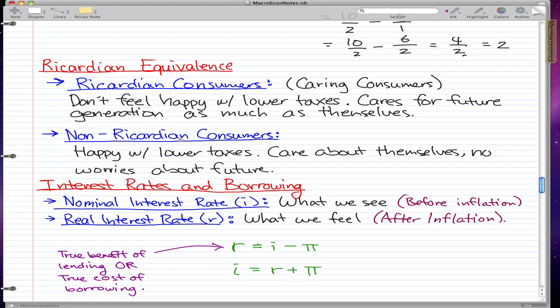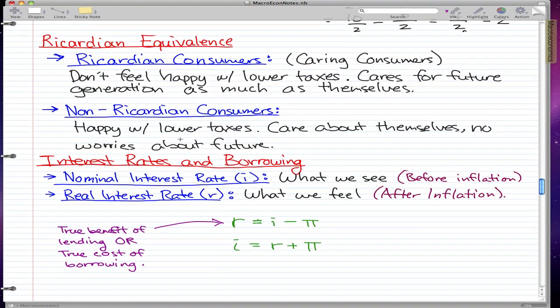Non-Ricardian consumers are the opposite. They're happy with lower taxes. They only care about themselves and don't worry about the future. They want lower taxes now so they can splurge more and let the later generation worry about the debt.